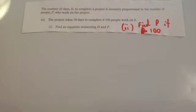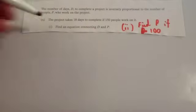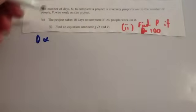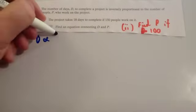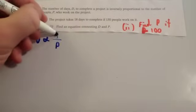So, the first part is, let's write down the formula. So, D, capital D, is proportional, inversely proportional to the number of people working on it. It's just the number of people working on it. It's not squared or anything. So, just one over P, like so.